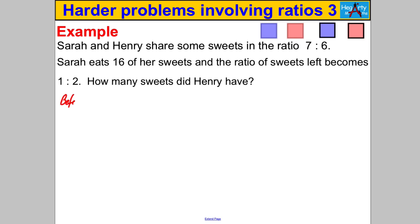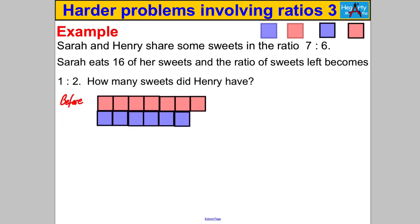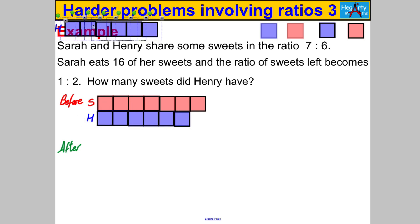I'm going to call this the 'before' situation, and afterwards I'm going to draw the 'after' situation. In the before situation, Sarah has seven parts and Henry has six parts. Now afterwards, after Sarah eats some of the sweets — she eats 16 sweets — the ratio becomes 1 to 2. Henry hasn't changed; we've been told nothing about what he's done. Henry hasn't eaten any sweets.